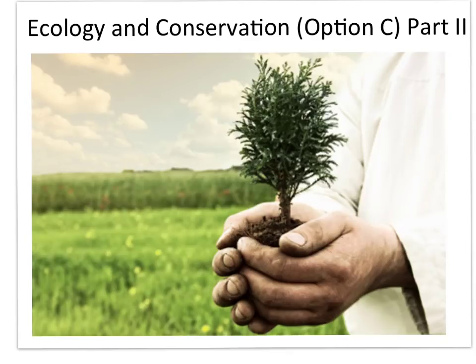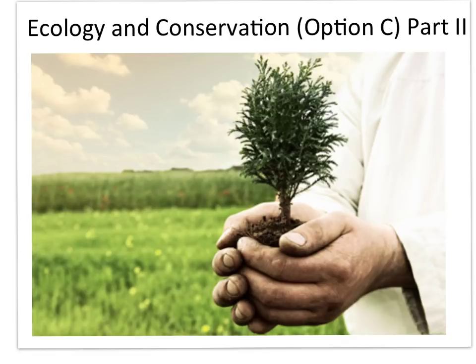IB Biology, Ecology and Conservation Option C, Part 2, continues our study of community ecology. Community ecology examines groups of populations living and interacting in a common habitat. This movie will have its focus on animal-plant interaction, known as herbivory, as well as predator-prey interaction and symbioses, specifically mutualism and parasitism. The essential idea is that community structure is an emergent property of an ecosystem.